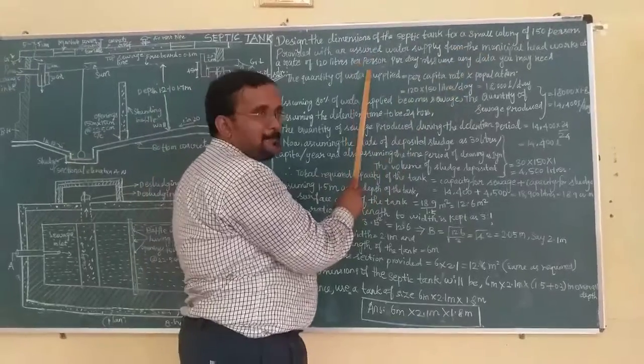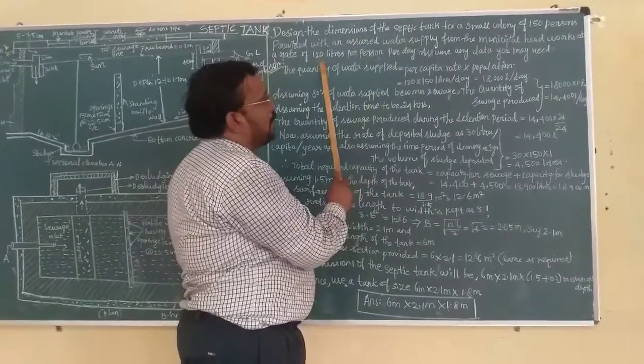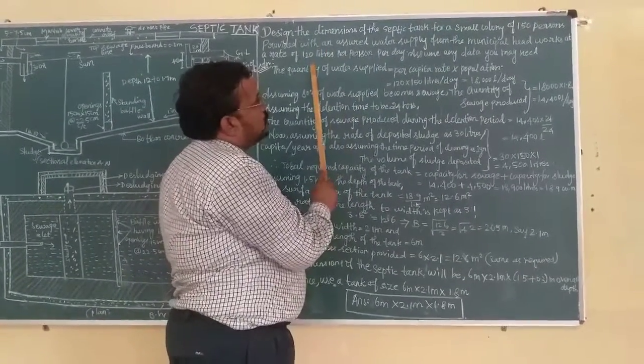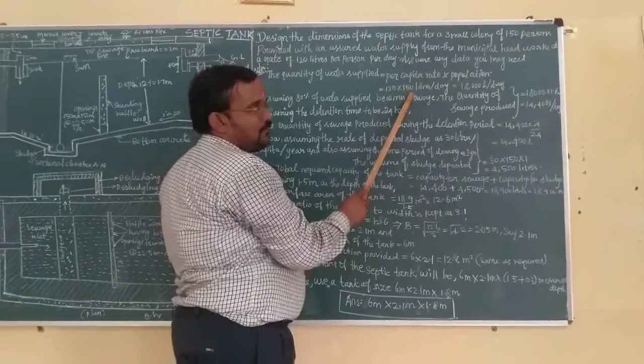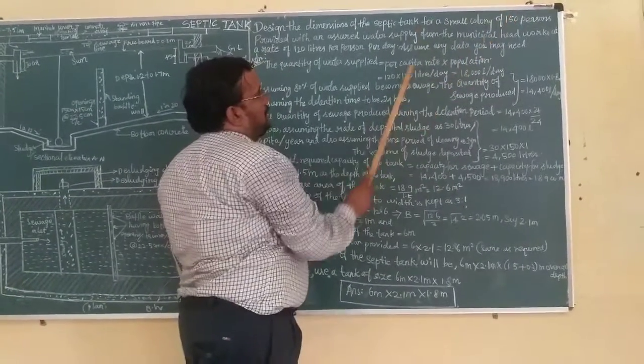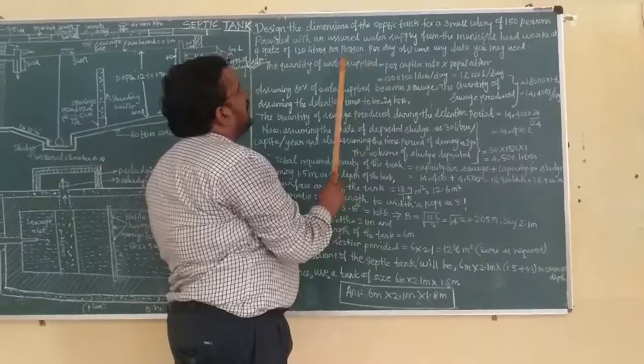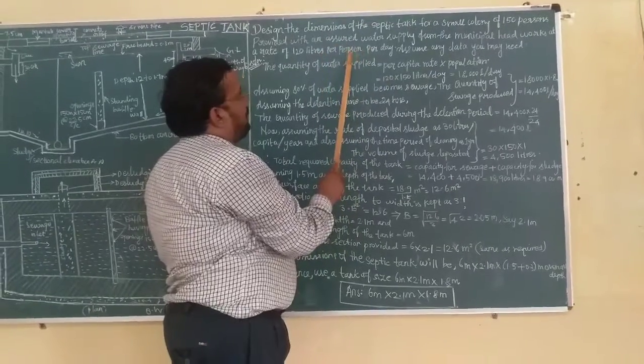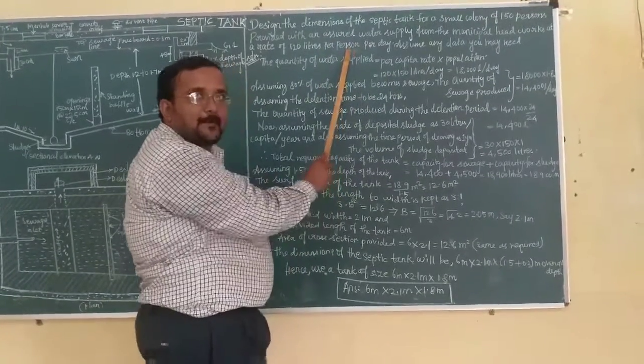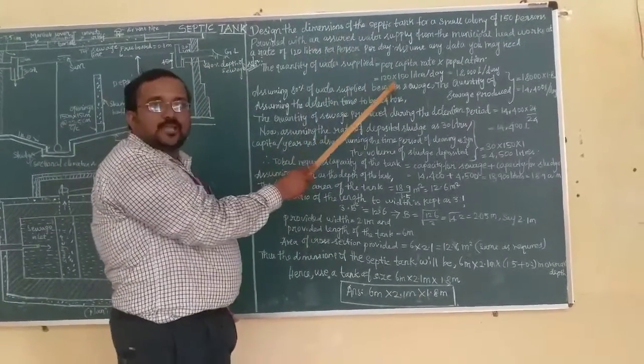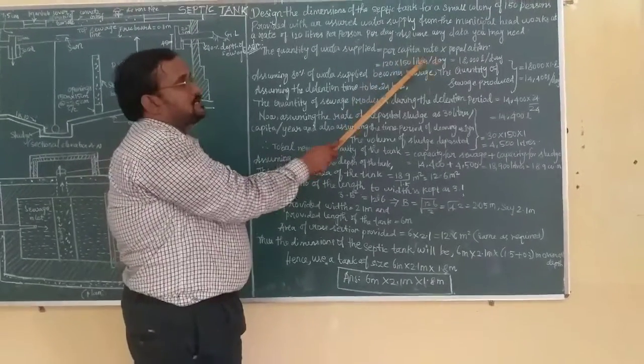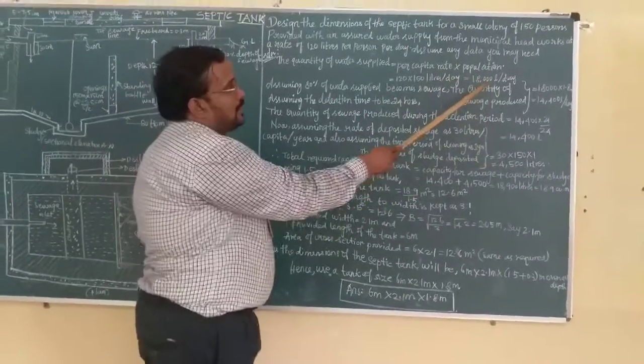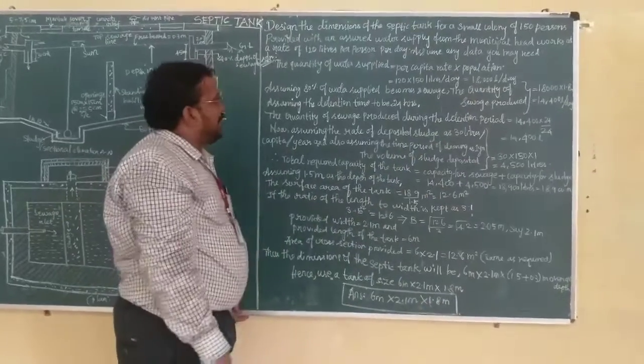For one person per day, 120 liters is supplied. So for 150 persons it means 120 times 150. 120 is the per capita per day, and 150 is the population. That will be 120 times 150 liters per day, which comes to 18,000 liters per day.